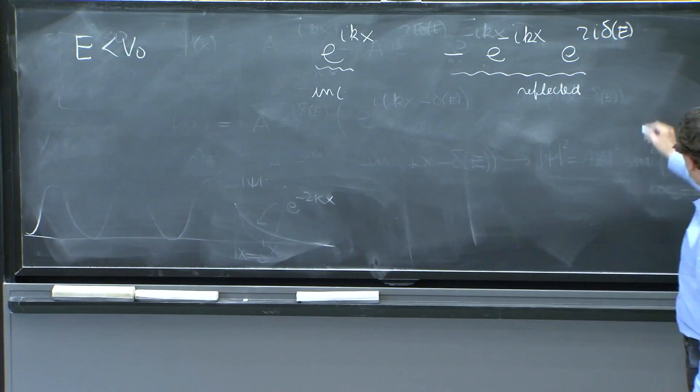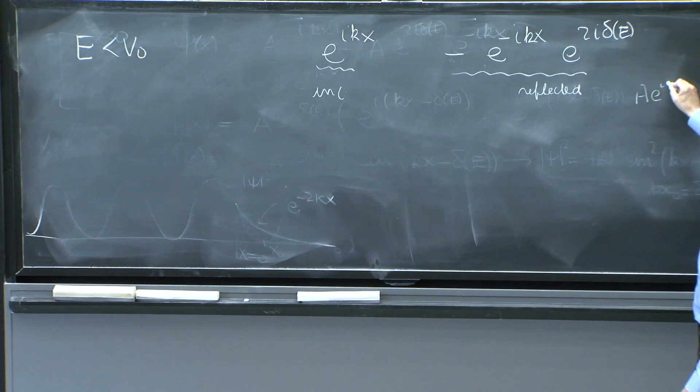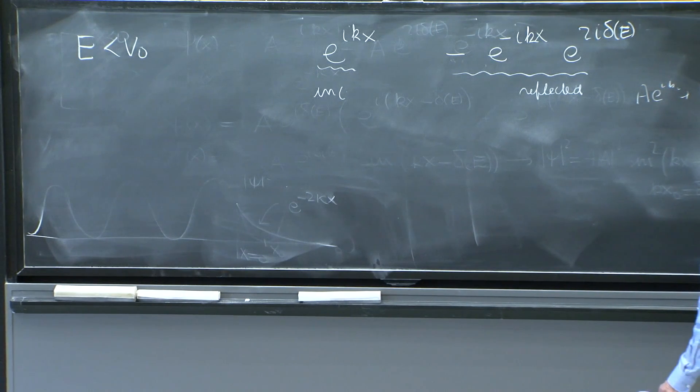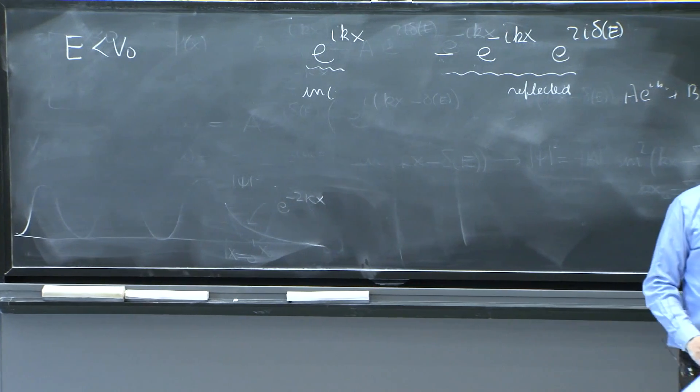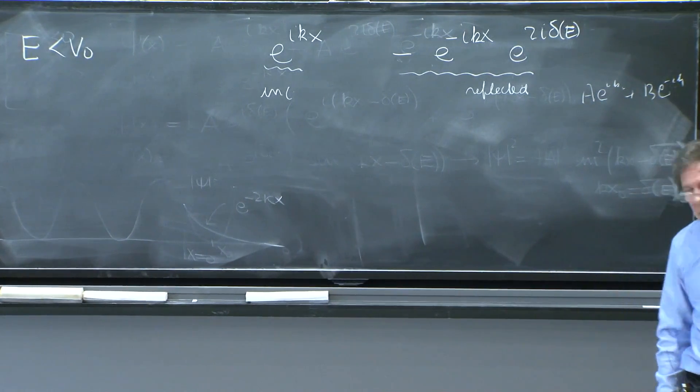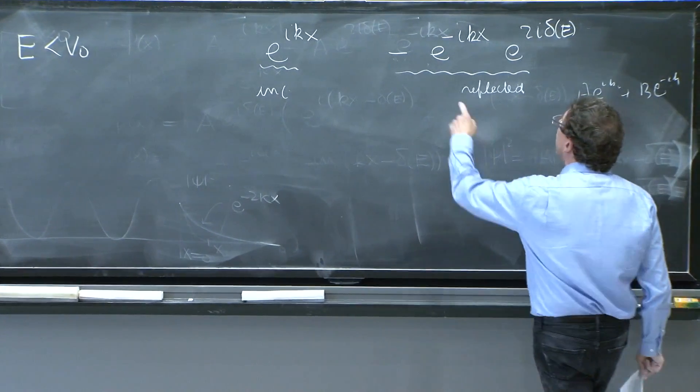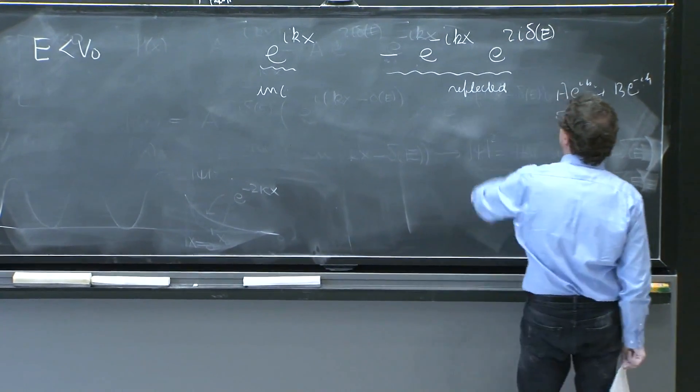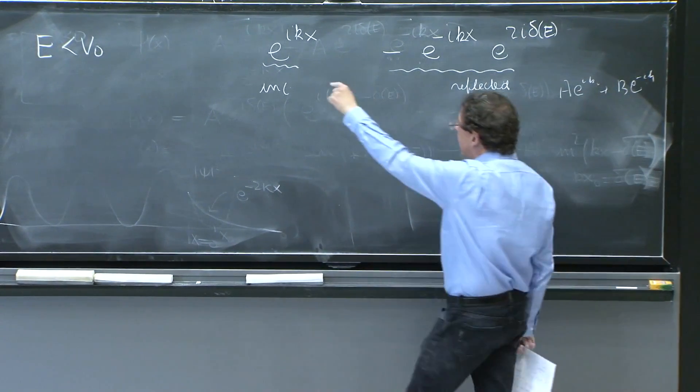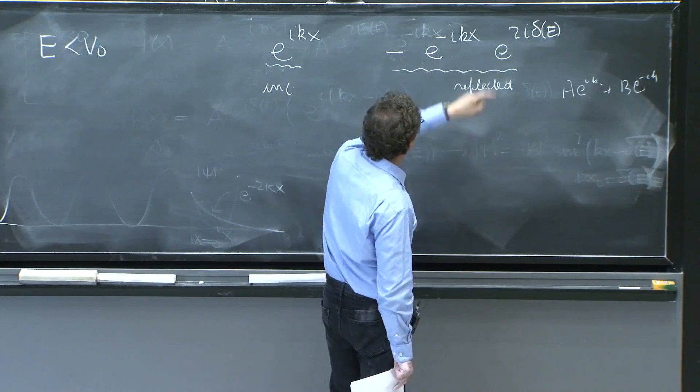They correspond to your a e to the ikx plus b e to the minus ikx. Remember, when the energy was less than v0, the ratio of b over a was minus e to the 2i delta. And since I take a equals to 1, you get this thing.